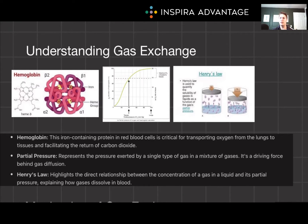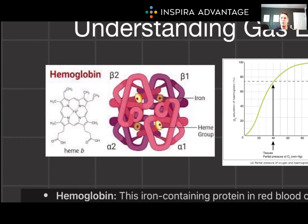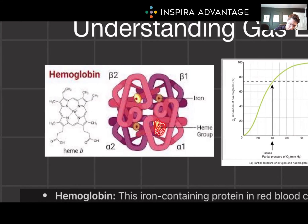But first, what is carrying O2 and CO2 to the lungs? Because simple diffusion just wouldn't cut it. So evolution came up with an elliptical red solution — the solution is hemoglobin. Hemoglobin is an iron-containing protein in red blood cells. It's critical for transporting both oxygen from the lungs to the tissues and facilitating the return of carbon dioxide, thanks to something called the heme group, which is made up of iron at the center.